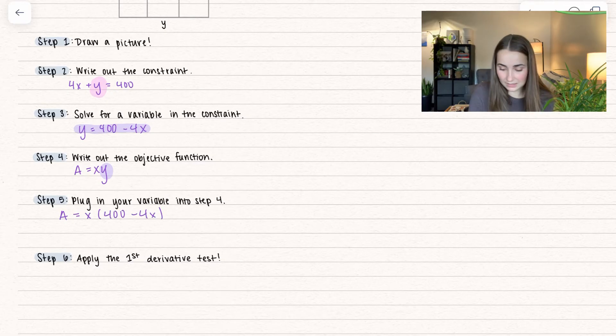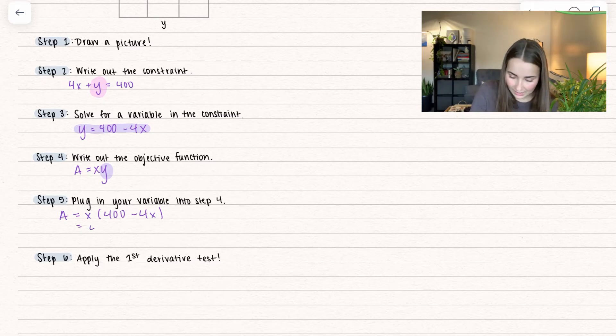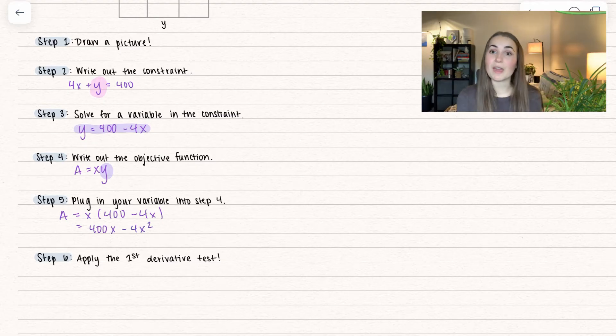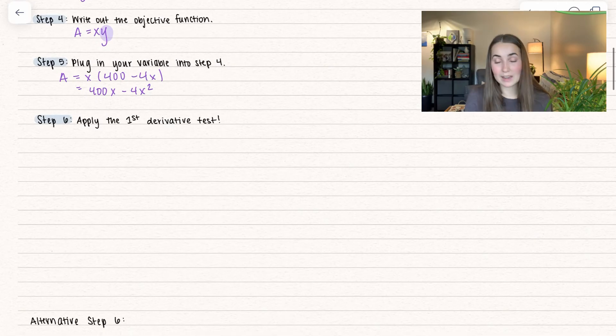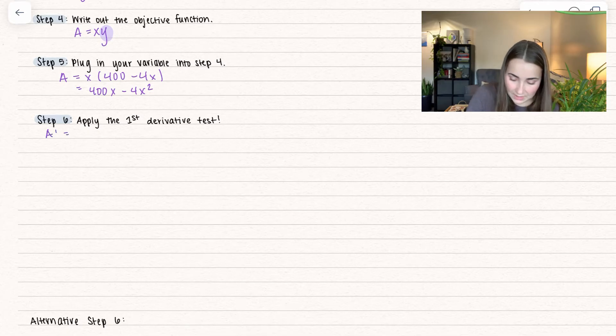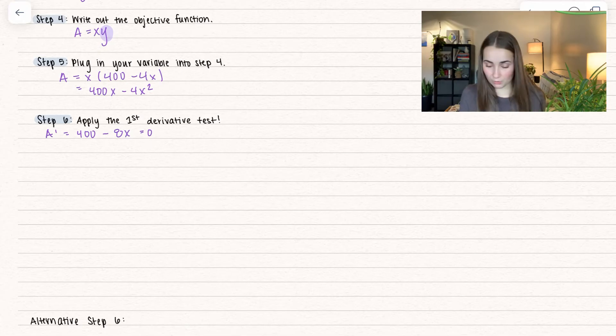I get area equals X times 400 minus 4X. Let's simplify. I'll distribute that X to both parts and get 400X minus 4X squared. We want to isolate one variable so we can take the derivative and don't have to mess with implicit differentiation and all that stuff. Our next step is to apply the first derivative test.